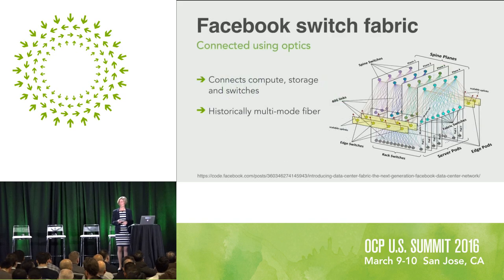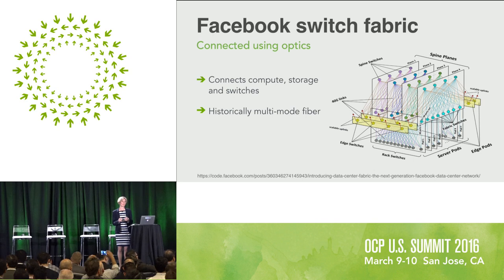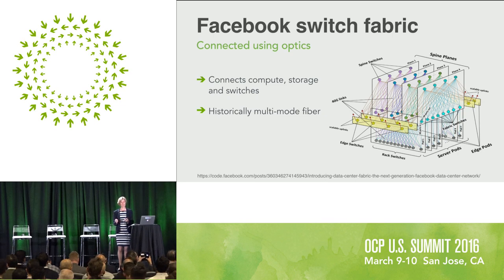Let's start by looking at a Facebook data center. This is a diagram of our switch fabric — something we've been very open about and shared in a number of blog posts. The diagram represents the interconnections between the major components: the compute, the storage, and the switches. Those colored lines are optical interconnects, all running over optical fiber. Just to give you an idea of scale, there are multiple tens of thousands of kilometers of fiber in a data center — that's almost the circumference of the earth.